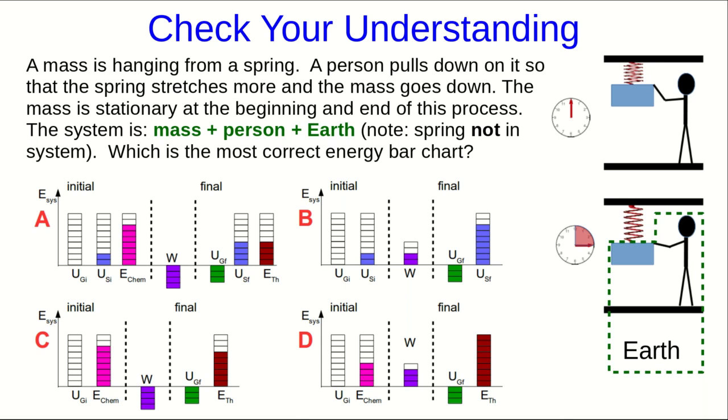Here is the question that I asked at the end of the previous part of this lecture, and the main issue here is noting that the spring is not in the system. So all of the bar charts A and B, which include a spring potential energy, are incorrect because the spring potential energy is part of the environment's energy.